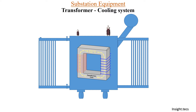As you can see over here, this is a model of a transformer. This is the main tank, this is the conservator tank, and these two are the radiator fins. Inside this main tank we have the winding and magnetic core.